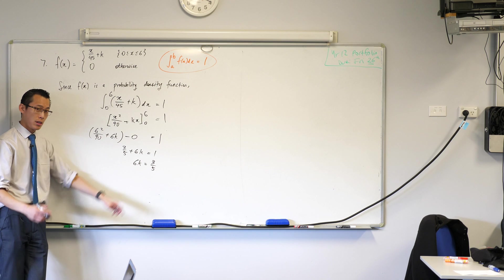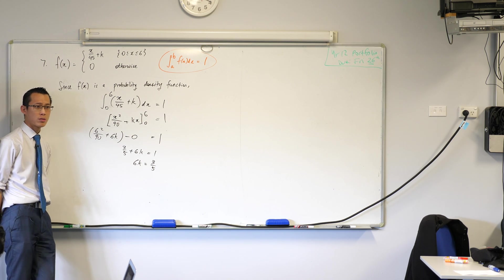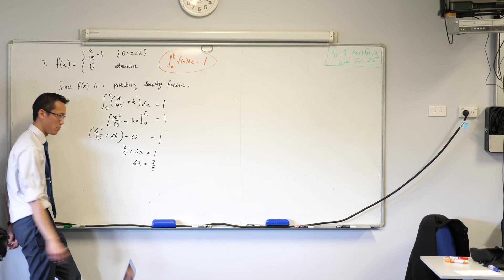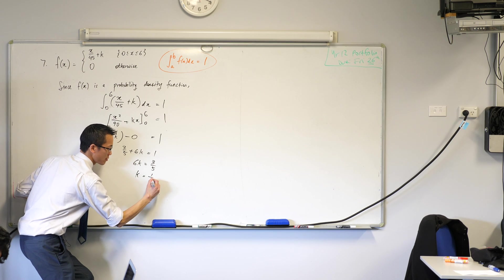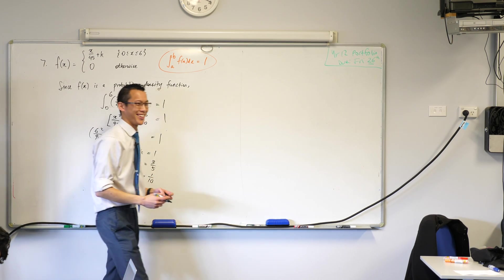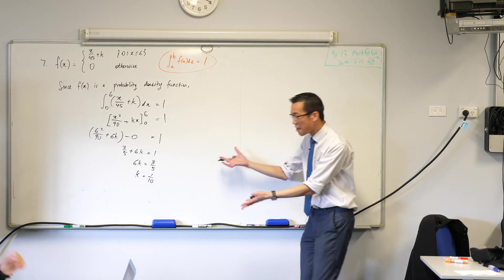2 fifths. And that means our final line, k will equal 3 over 30, which is 1 over 10. Is that one of our answers? That's a relief, isn't it? So, option C, that's how we did it.